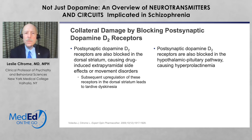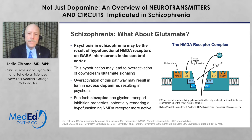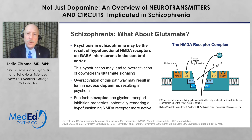If we block postsynaptic dopamine D2 receptors in the hypothalamic-pituitary pathway, we can cause hyperprolactinemia. So perhaps there are other ways of addressing psychotic symptoms that don't involve dopamine receptor blockade. Let's take a look elsewhere — what about glutamate receptors? Glutamate pathways are actually a way of addressing psychosis. It turns out that psychosis and schizophrenia may be the result of hypofunctional glutamate receptors — NMDA receptors specifically — on GABA interneurons in the cortex.